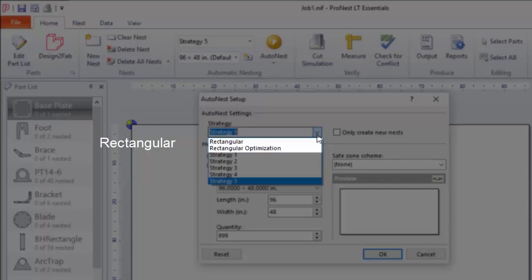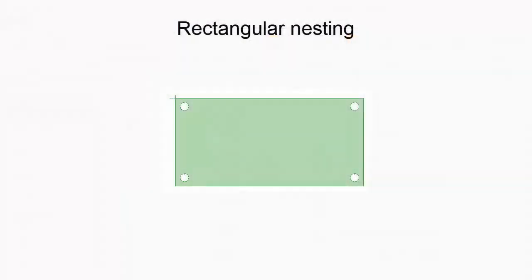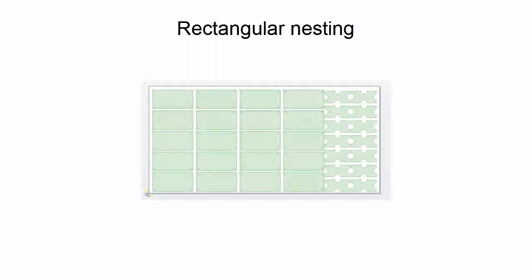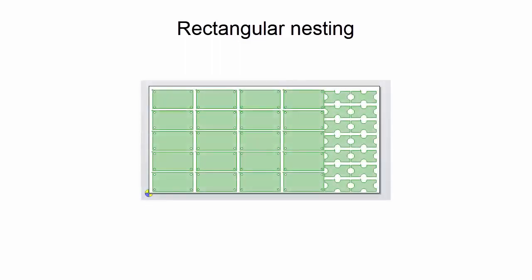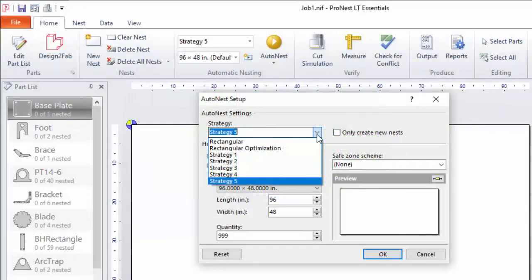The rectangular options are Rectangular and Rectangular Optimization. With these, ProNest draws a rectangular box around the parts and then nests those rectangles. This is a good, fast option for rectangular-shaped parts. However, it may not work well for parts with different shapes and contours.